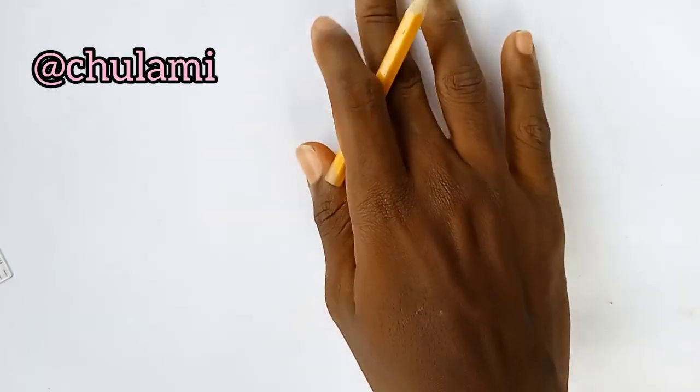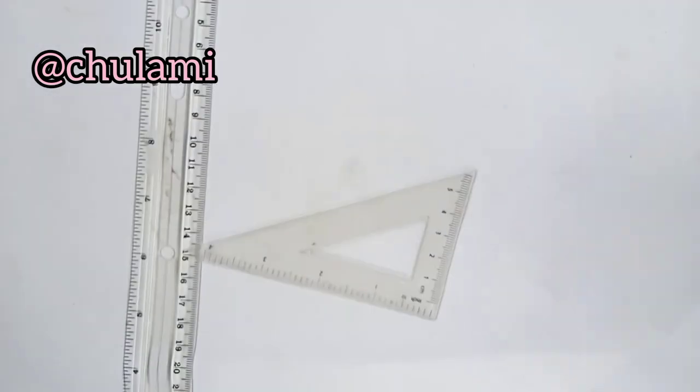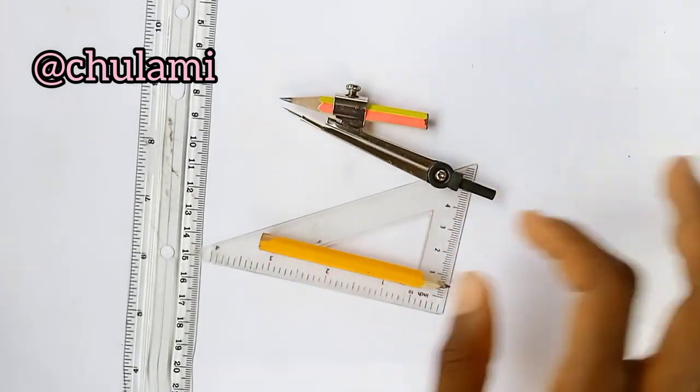So this is our parameter. With this parameter I'm going to draw an involute. Now to draw an involute you just need about four instruments: your meter rule, your set square, your compass, and your pencil.